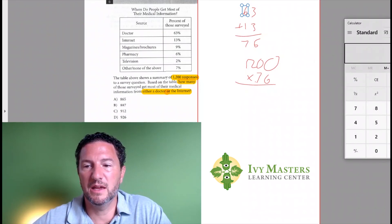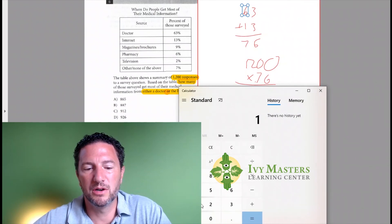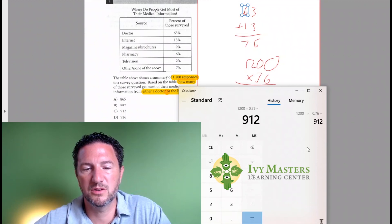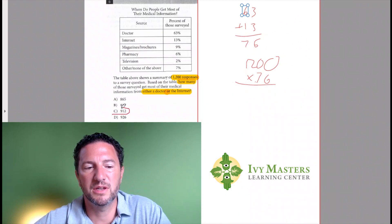So I'm going to take my handy dandy calculator out, I'm going to move it over here so you can see it, and we do our 1200 times 0.76, and our high-tech instrument gives us 912. Our correct answer here is C.